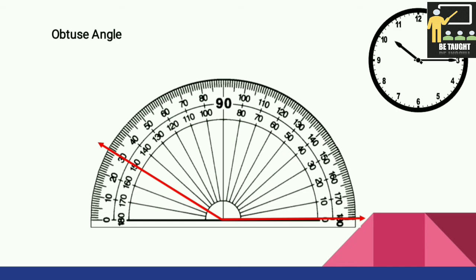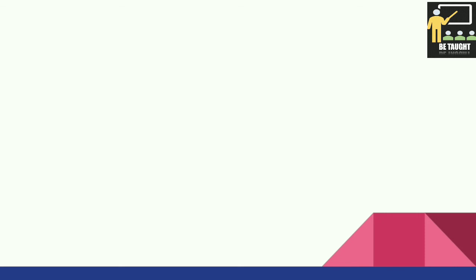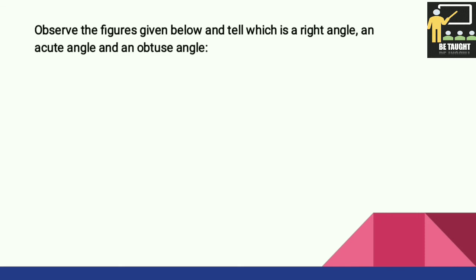For an obtuse angle, it is greater than 90 degrees. Here it measures 150 degrees, so it is an obtuse angle. On the clock, an obtuse angle is also formed. Now we shall solve an exercise: observe the figures given below and tell which is a right angle, an acute angle, and an obtuse angle.